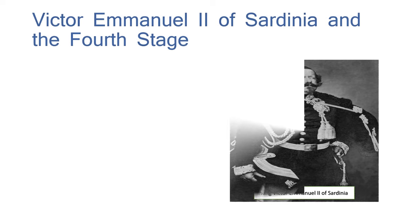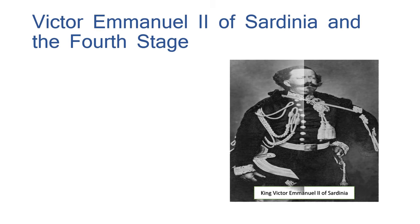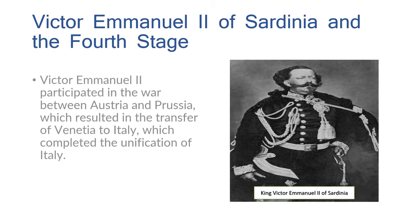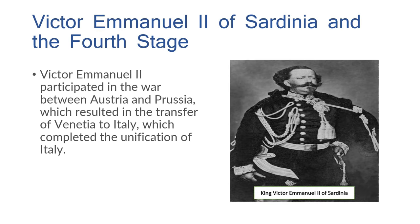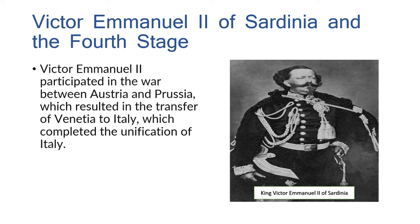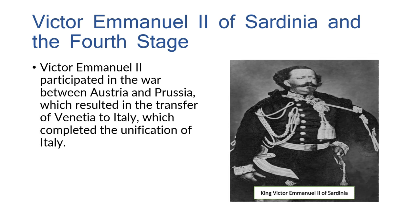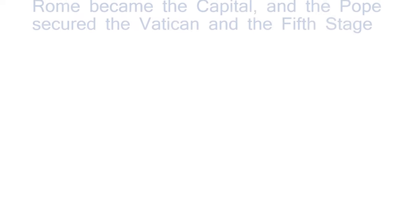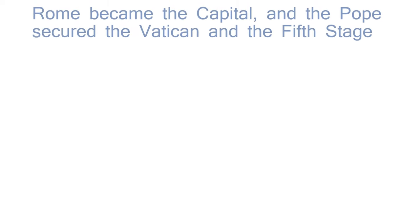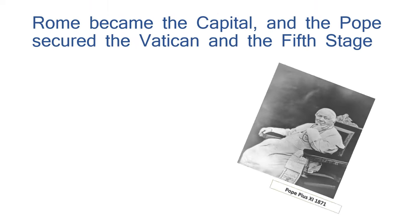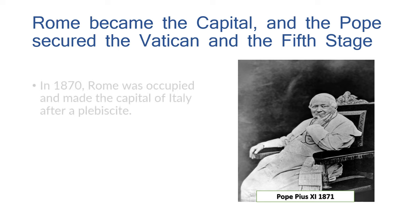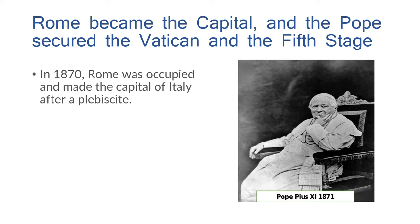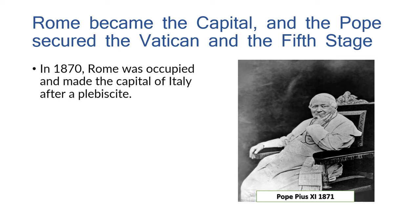Stage four — Victor Emmanuel II of Sardinia: Victor Emmanuel II participated in the war between Austria and Prussia, which resulted in the transfer of Venetia to Italy, completing the unification of Italy. Stage five — Rome became the capital: the Pope secured the Vatican, and in 1870 Rome was occupied and made the capital of Italy after a plebiscite.